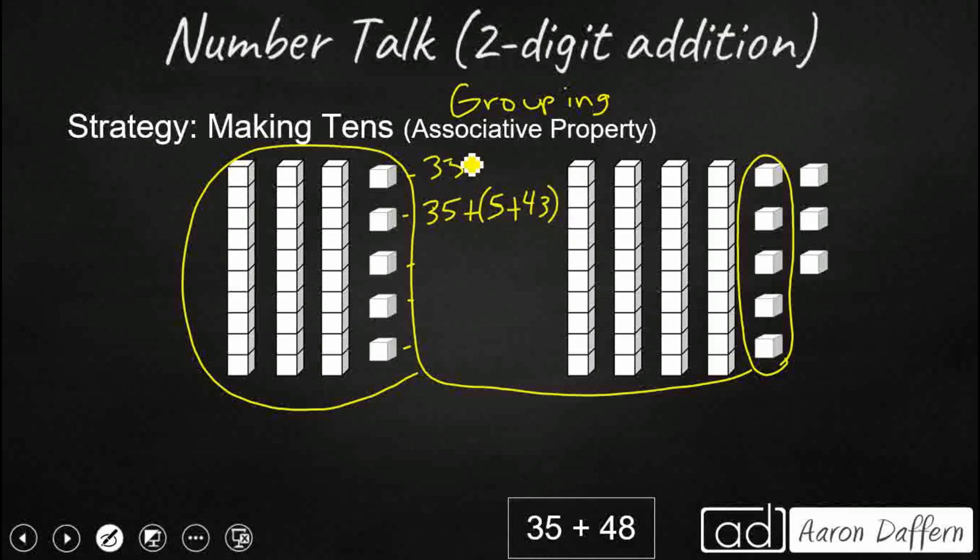So 35 plus 48 is really just 35 plus 5 plus 43 because 5 plus 43 make 48. And the associative property simply lets me shift the parentheses or regroup it so that my 5 and 43 get added second because I'm going to first take that five and I'm going to add it to my 35. So you notice that my three addends stay the same, 35 plus 5 plus 43. I'm just going to add my 35 and 5 first. So I'm going to take these five, add it to these 35.